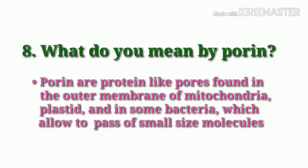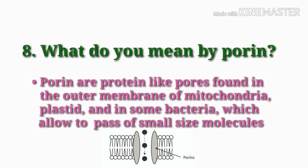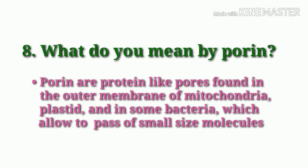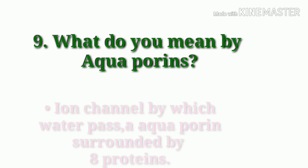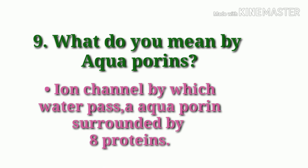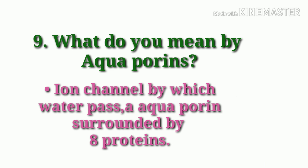What do you mean by porins? Porins are protein-like pores found in the outer membrane of mitochondria, plastids, and in some bacteria, which allow small size molecules to pass. What do you mean by aquaporins? Ion channels through which water passes are called aquaporins, and aquaporins are surrounded by eight proteins.